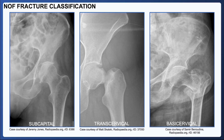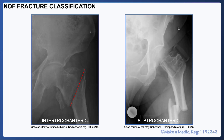Here are some real-life examples of different types of hip fracture. The subcapital fracture is subtle, but you can see a little notch that disrupts Shenton's line at the junction between the head and neck of the femur. This is a transcervical fracture that goes through the neck of the femur, and on the right is a basicervical fracture. And finally, here's an example of an intertrochanteric fracture and a subtrochanteric fracture.